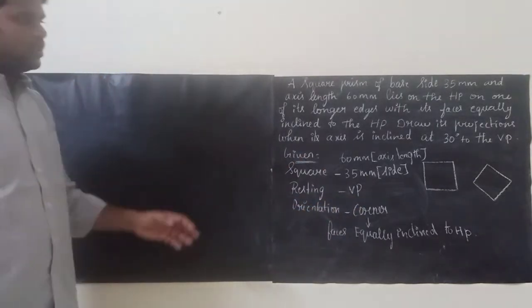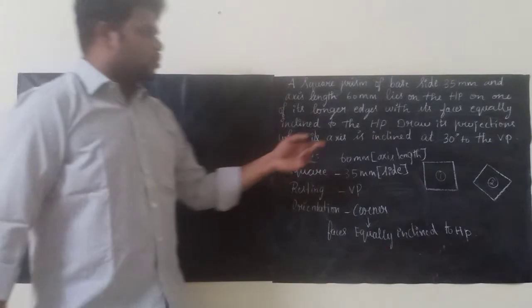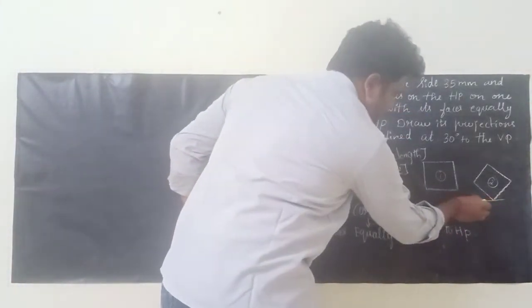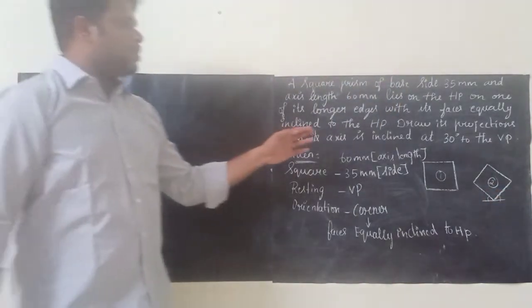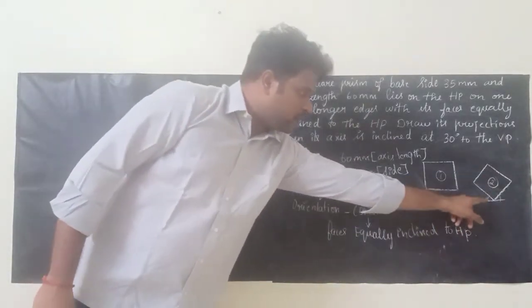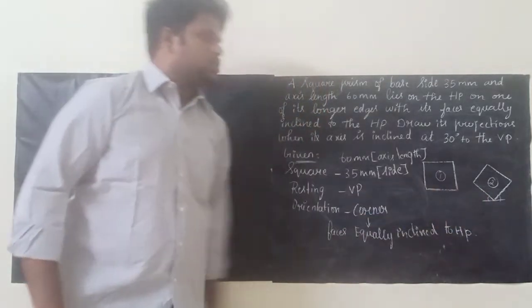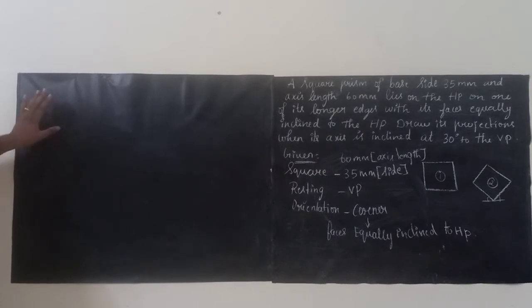For the orientation there are two types of squares. One is the first type and this is the second type. Out of these two, which one do you have to use? See the words 'faces equally inclined.' Faces equally inclined means the angle here will be 45 degrees. They clearly mentioned faces equally inclined to HP, so we have to go with this square — the second type where only the faces are equally inclined. Our base diagram will be this square.